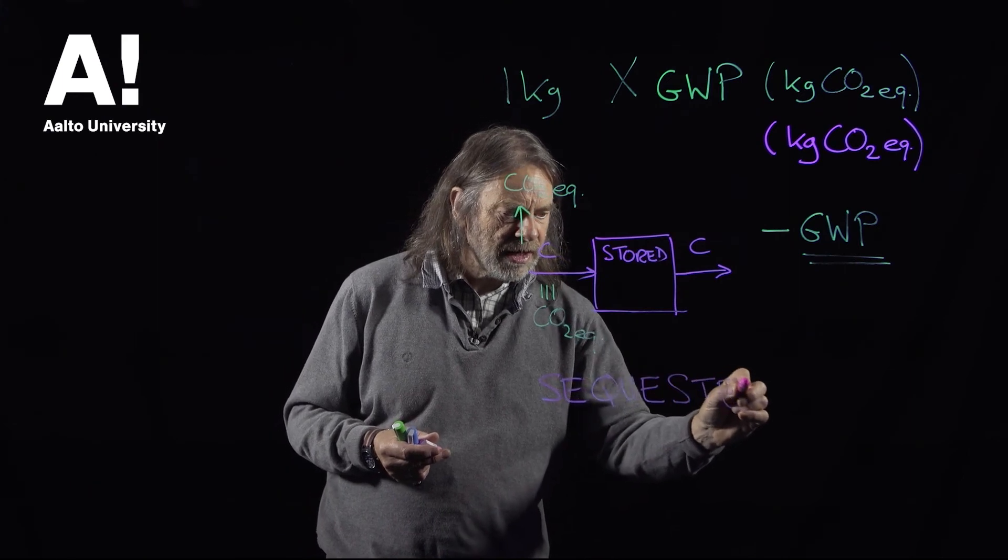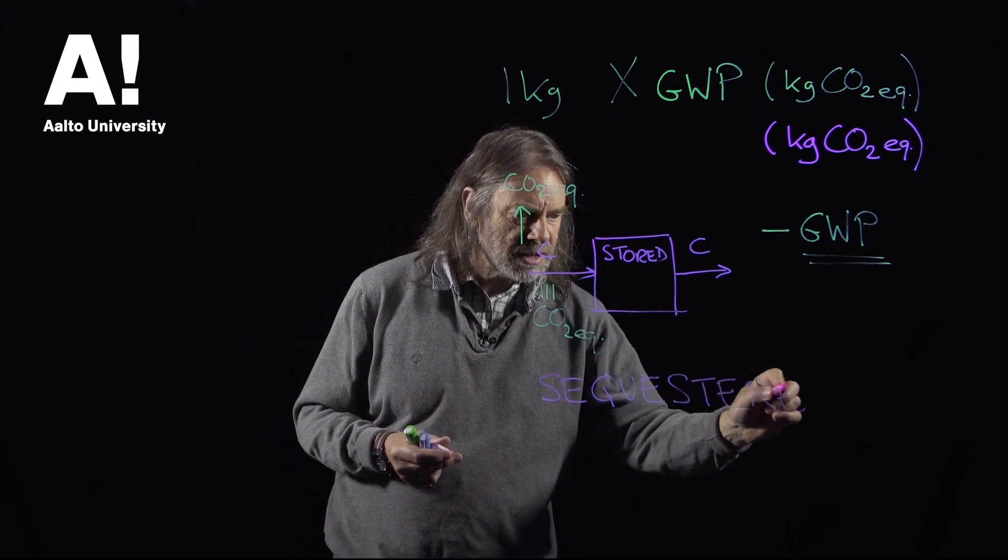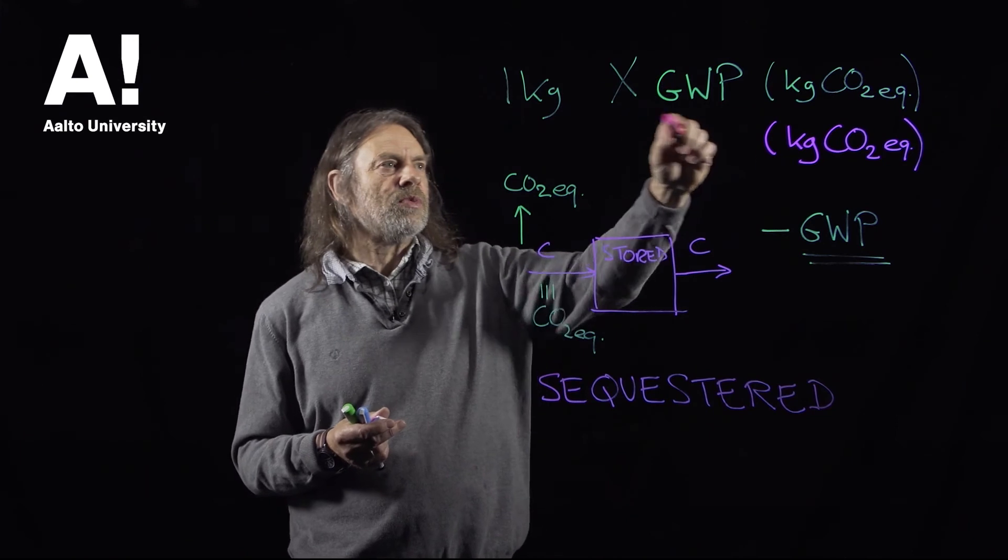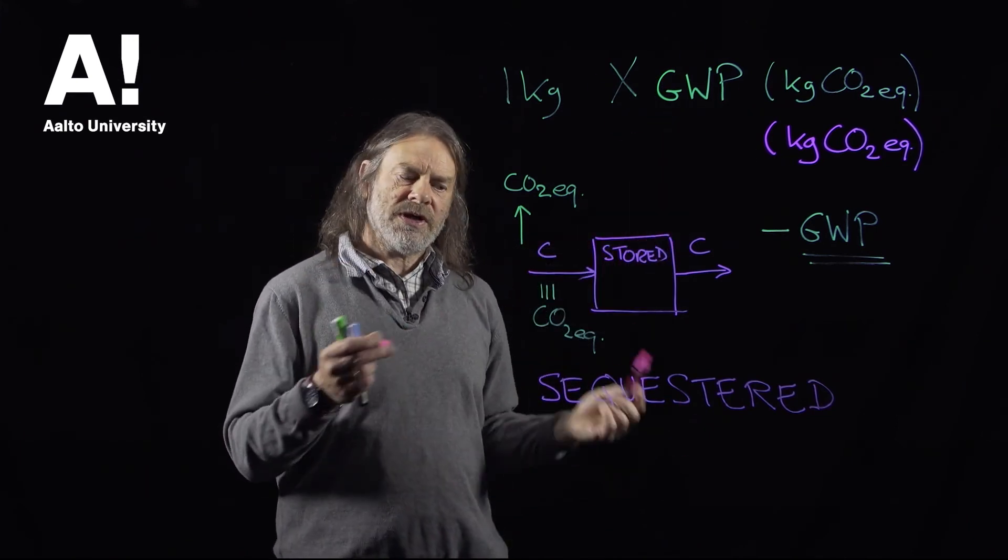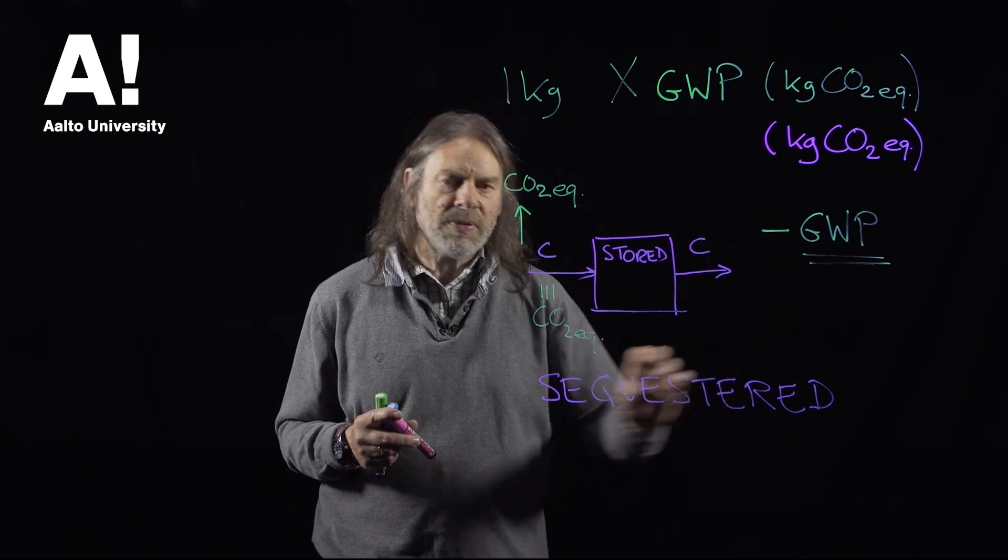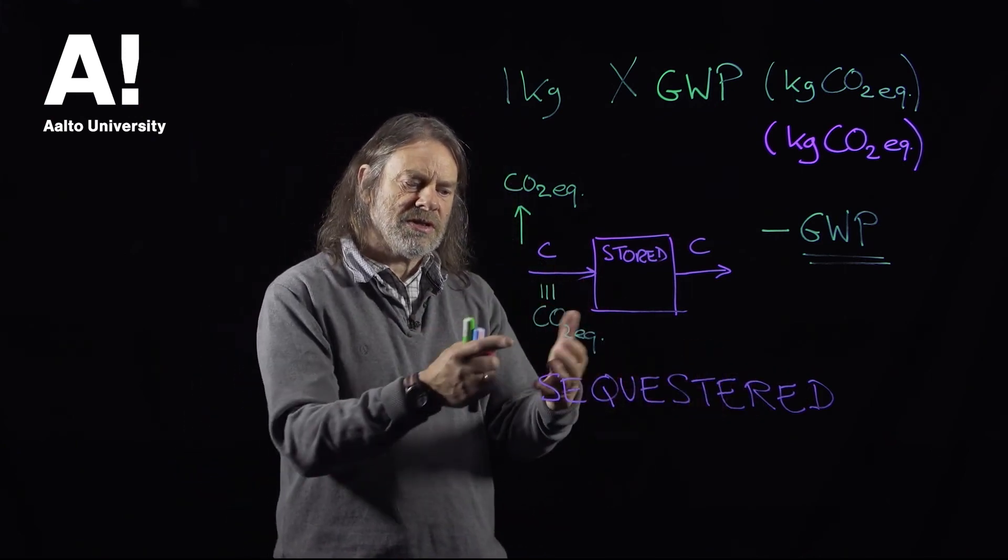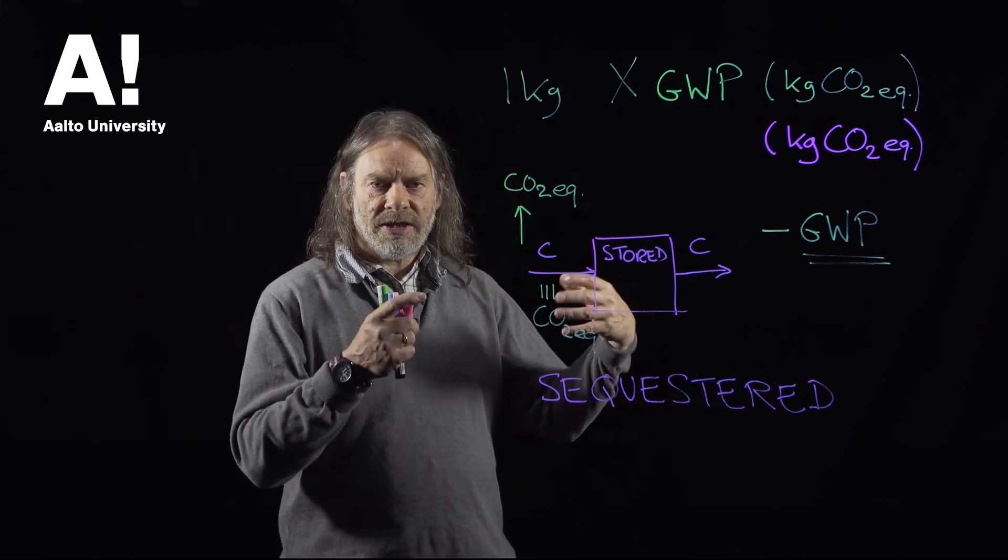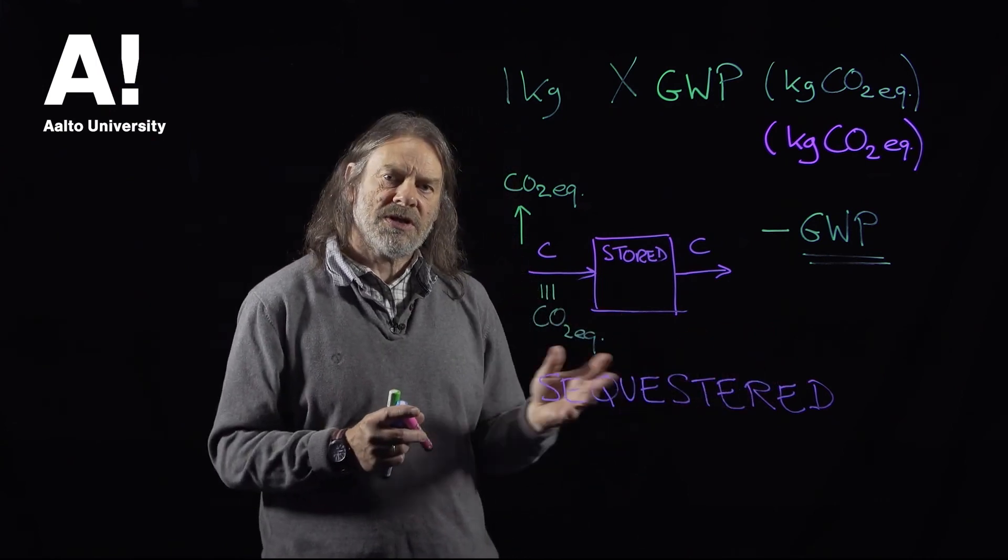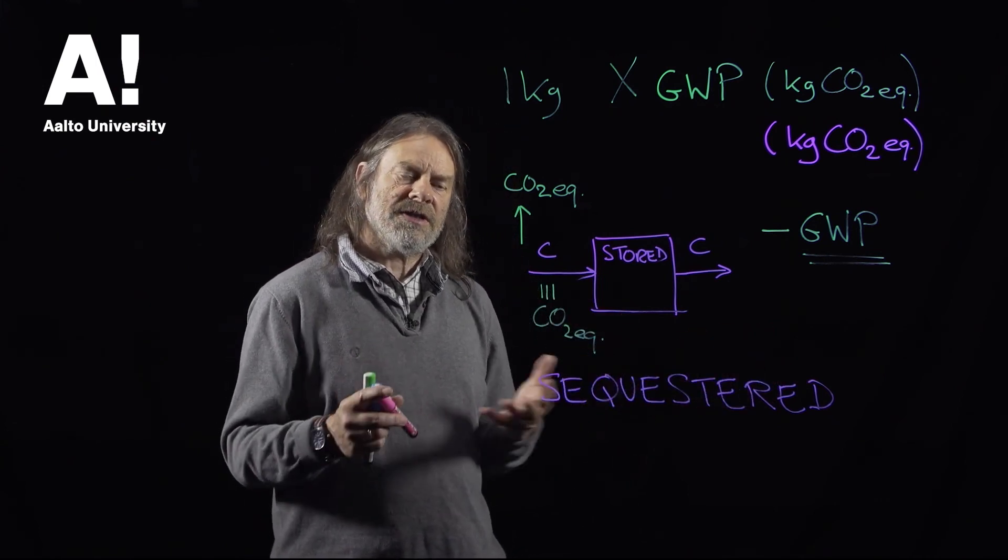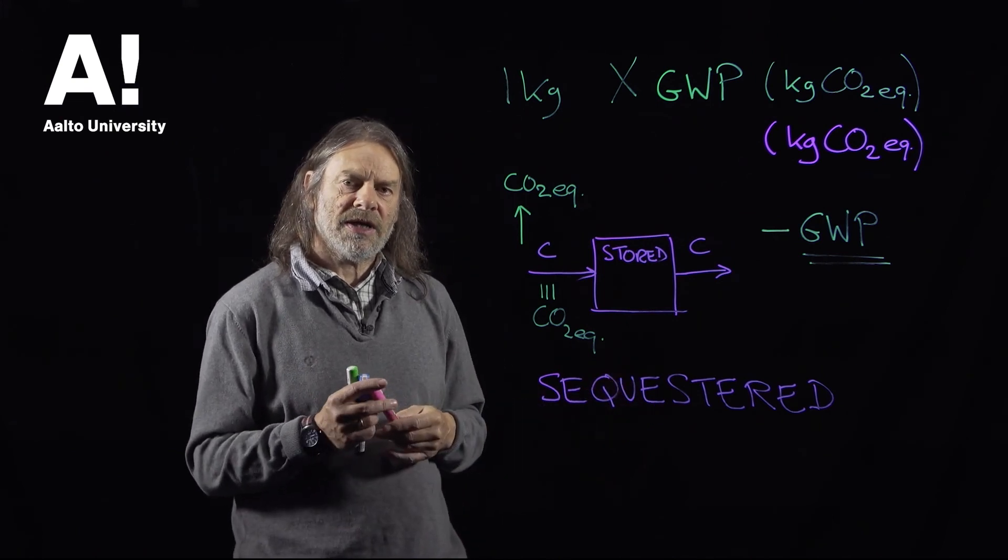If you try and include the sequestered carbon and the global warming potential impacts together in one indicator, you have to do some quite complicated calculations around the rate at which this carbon is sequestered and the amount of time for which that carbon is sequestered in the product. And there's still a lot of debate as to how those calculations should be done.